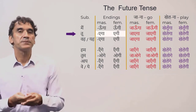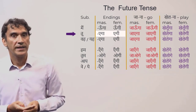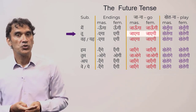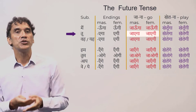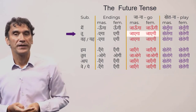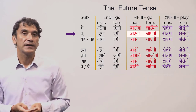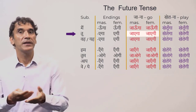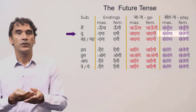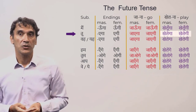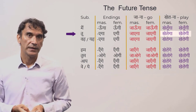For the subject 'tu', the endings are 'ega' or 'egi.' 'Tu jaega' (masculine) and 'tu jaegi' (feminine) both mean 'you will go.' I just want to remind you that this is an extremely informal form. For the verb 'khelna': 'tu khelega' and 'tu khelegi' — 'you will play.'